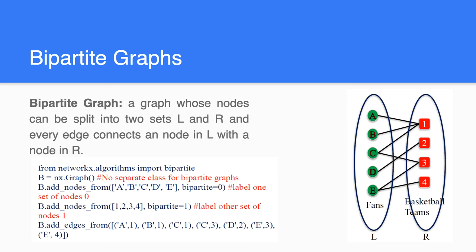Then we connect the edges: A to 1, B to 1, C to 1, C to 3, D to 2, E to 3, E to 4, and so on. But keep in mind you cannot add edges within the same set — you cannot add A to B, B to C, C to D, or D to E, and similarly not 1 to 2, 2 to 3, 3 to 4, or any combination within that set.